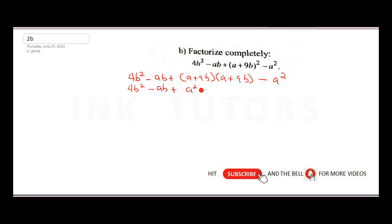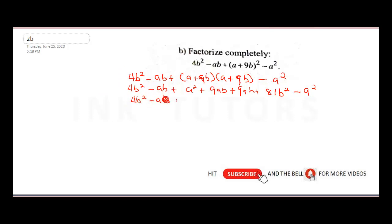Continuing the expansion: 9b × a = 9ab, and 9b × 9b = 81b². So the full expansion gives us: 4b² − ab + a² + 9ab + 9ab + 81b² − a². Combining the 9ab terms gives 18ab.